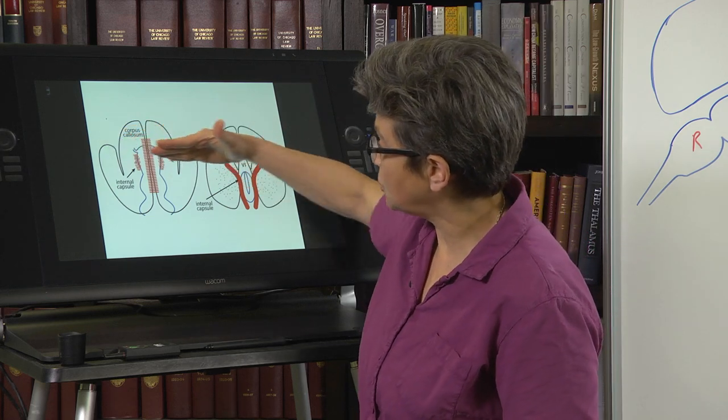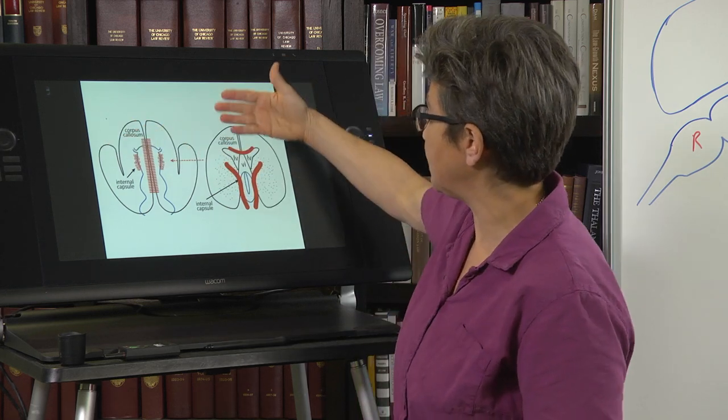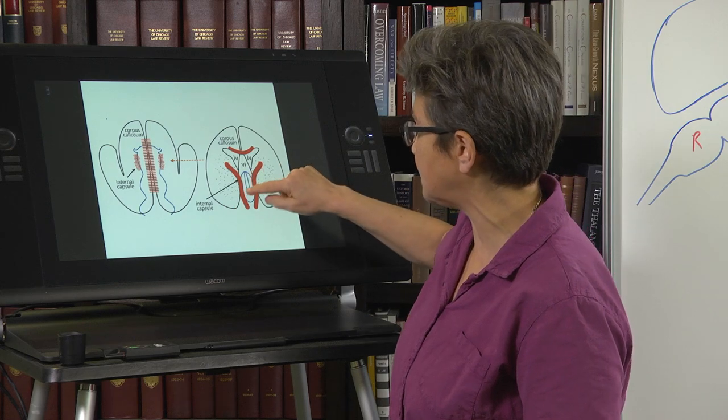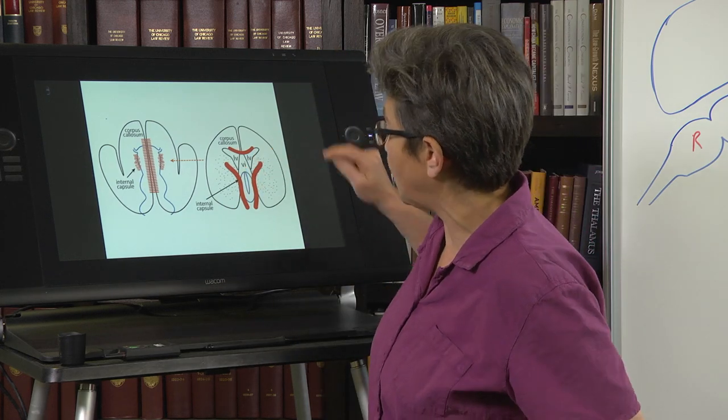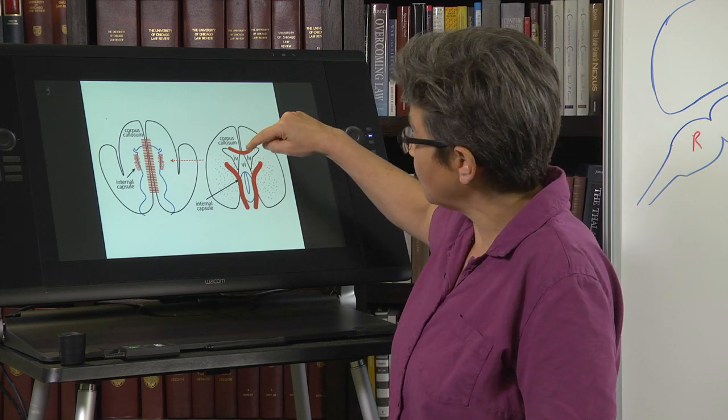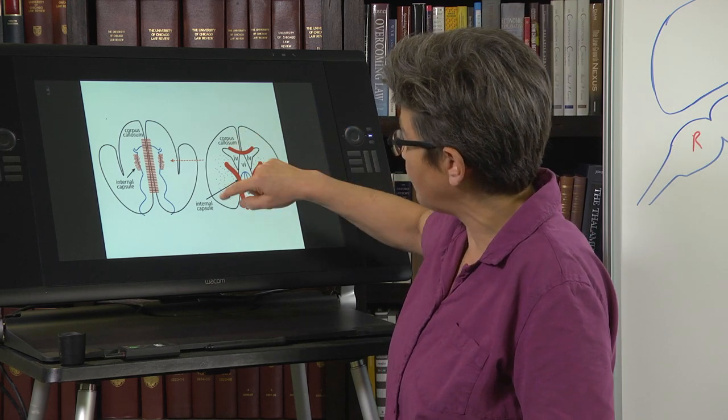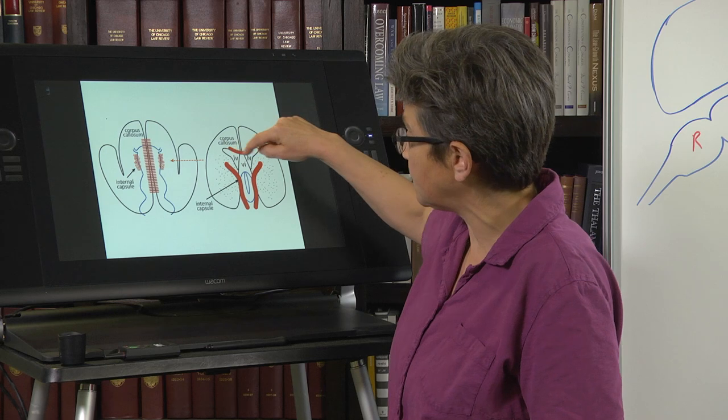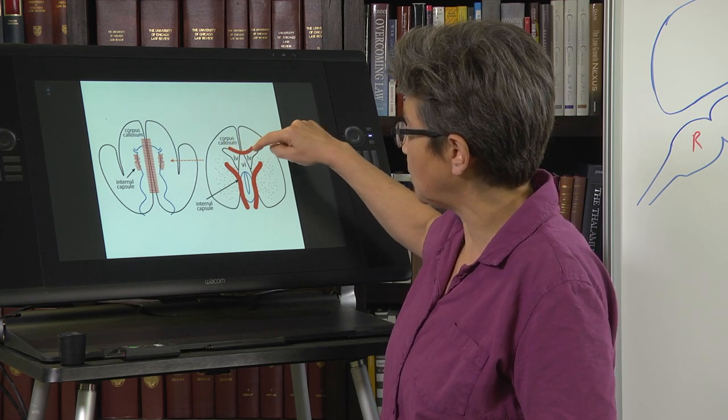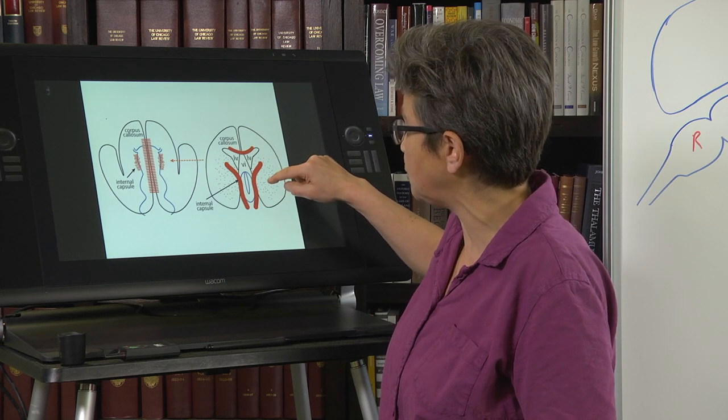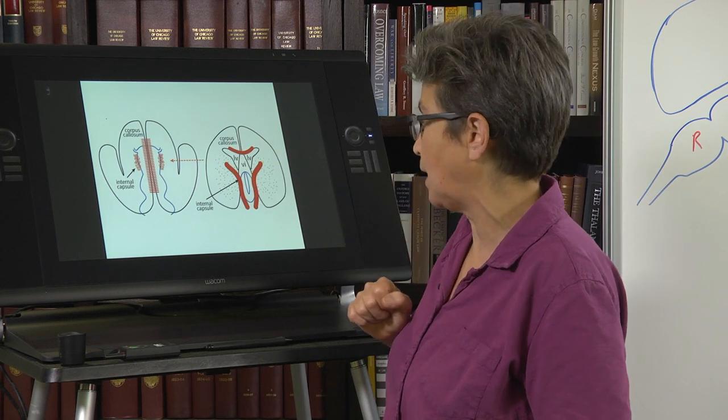If we take a section that comes through here, we can see it in this way. Here's the diencephalon. Here's that third ventricle, that slit up here would be choroid plexus. And here are the two hemispheres. They are joined by the corpus callosum. The two hemispheres are joined to each other by the corpus callosum. And they are joined to the diencephalon by the internal capsule.